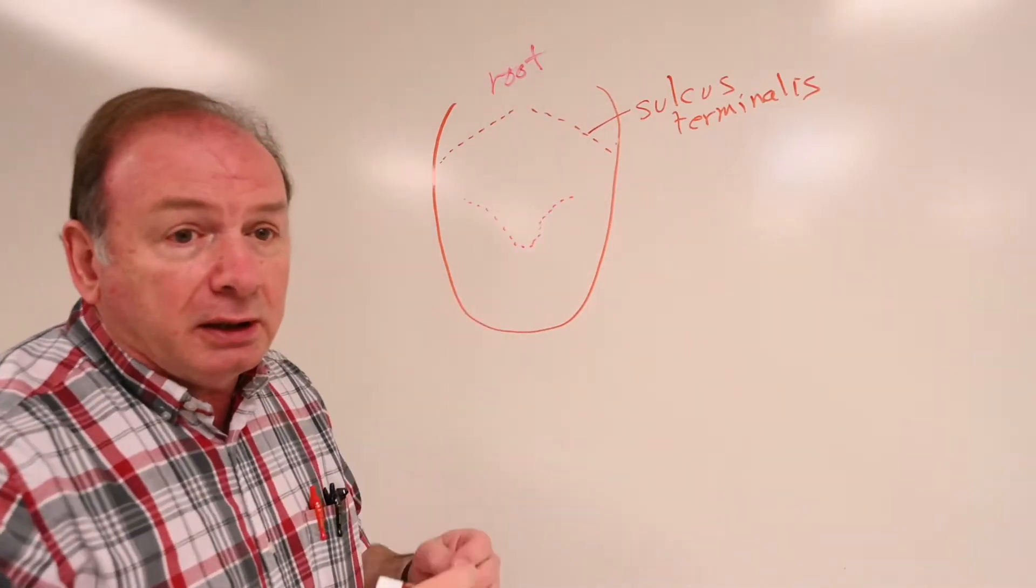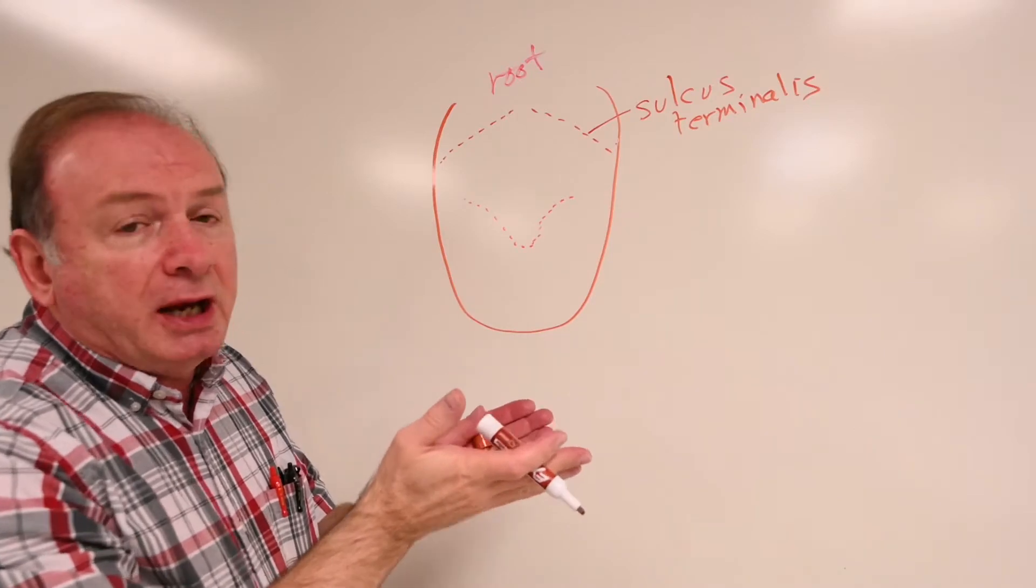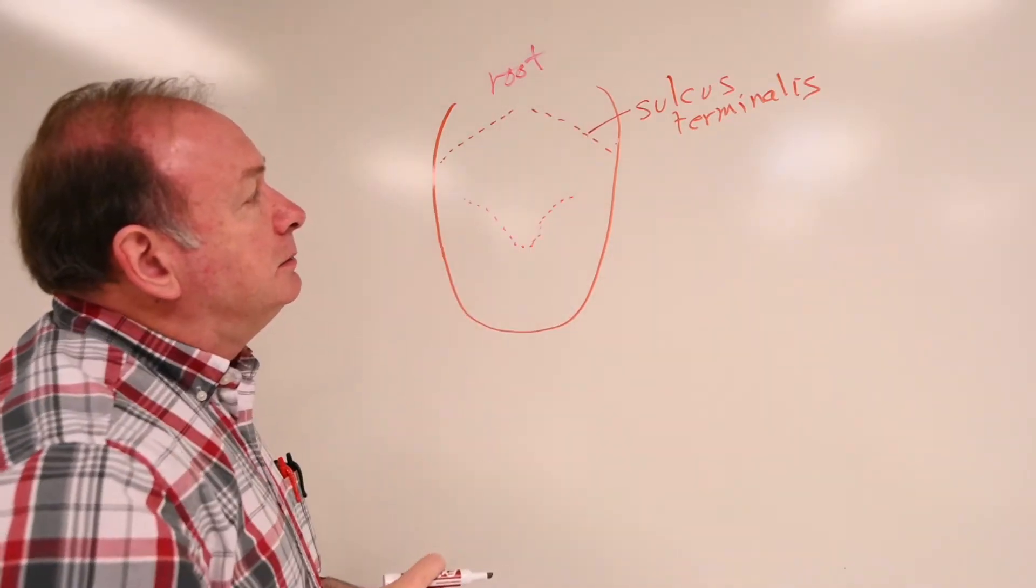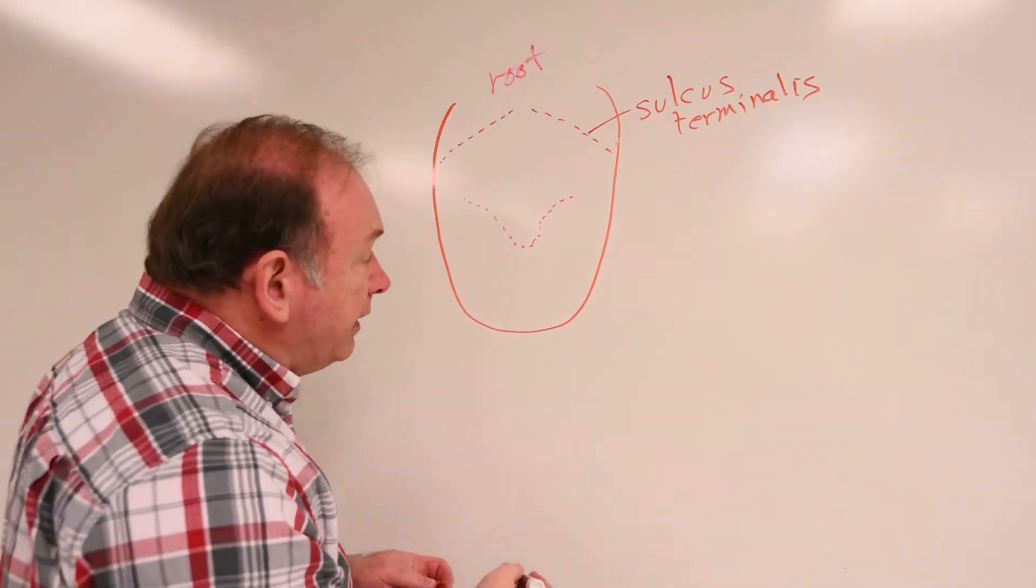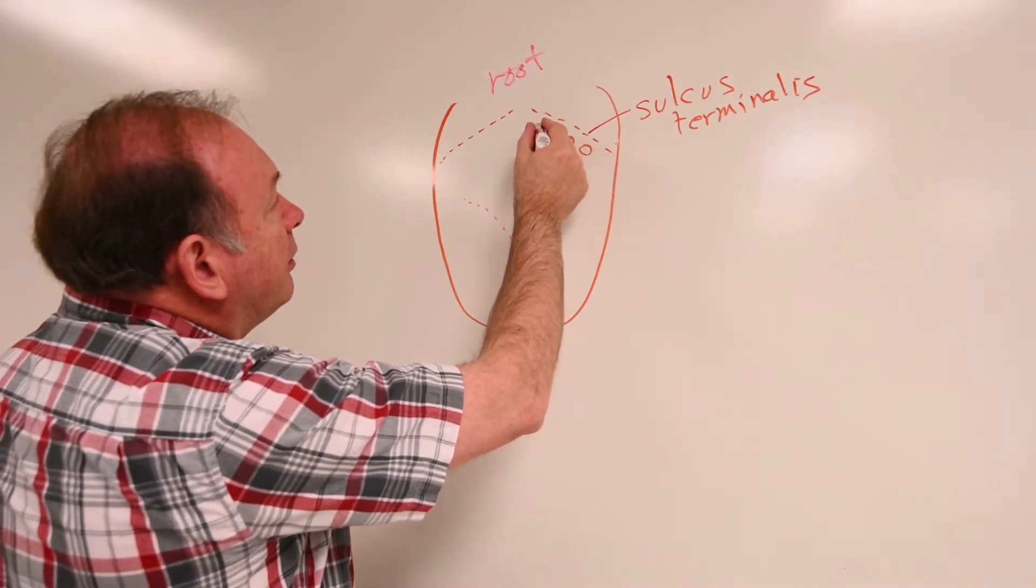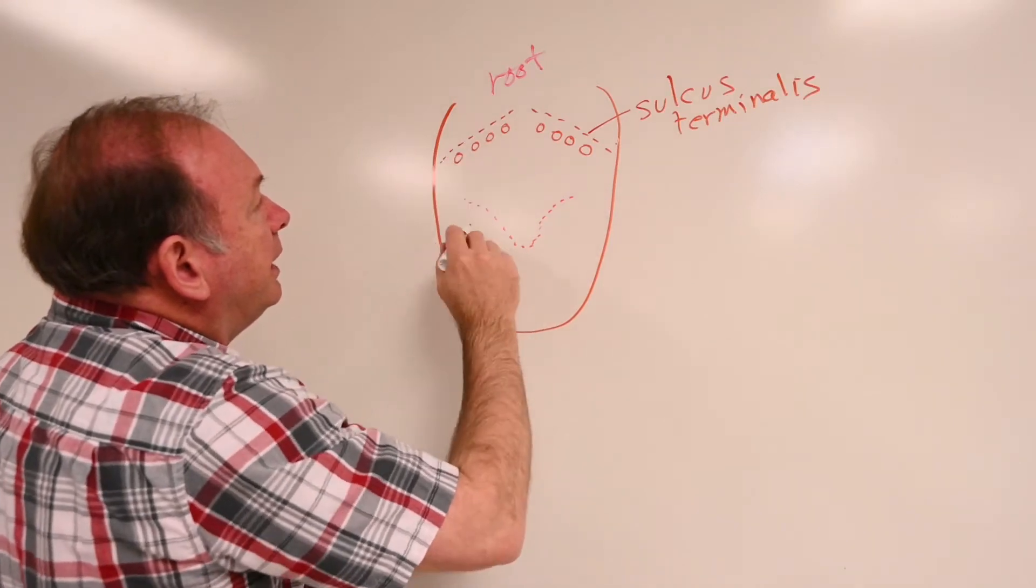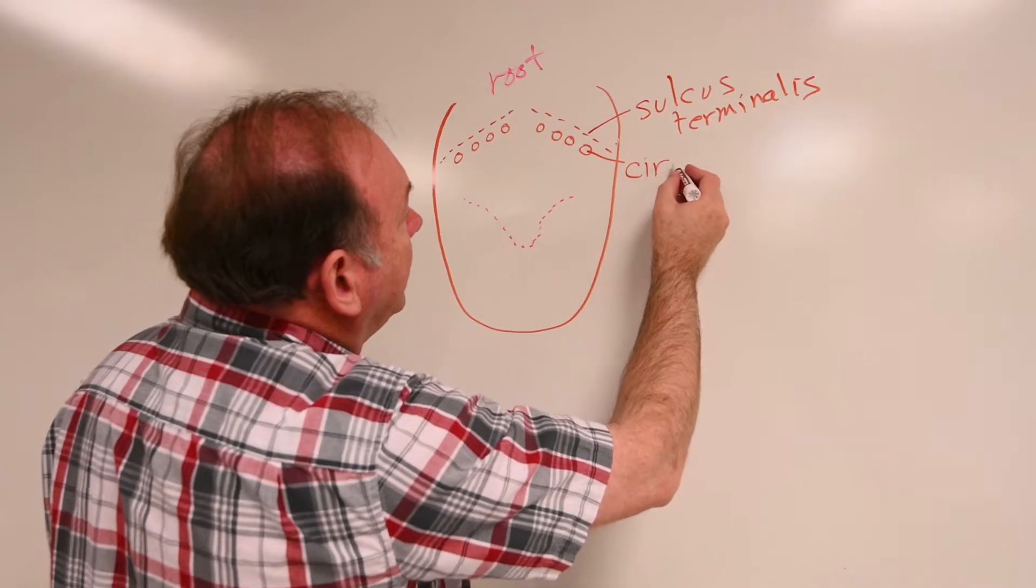So it forms a little bit of a point of change in the surface of the tongue there. And in front of that sulcus terminalis, there is a series of special papillae in a row, right along there. And these are called circumvallate papillae.